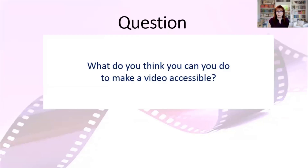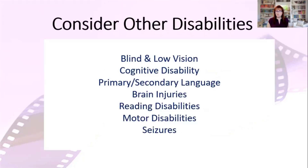The answer I ordinarily get is captions — we need to put captions on a video so it's accessible to a person who is deaf, or we need to add a transcript. So my follow-up question is: are we only concerned about one disability? Are we only making videos accessible to limited groups of people? What about people who are blind and have low vision, or persons with cognitive disabilities, or a person whose primary language differs from the one in the video? How about people with brain injuries or reading disabilities, motor disabilities, or those prone to seizures? Can we make videos accessible for them as well?